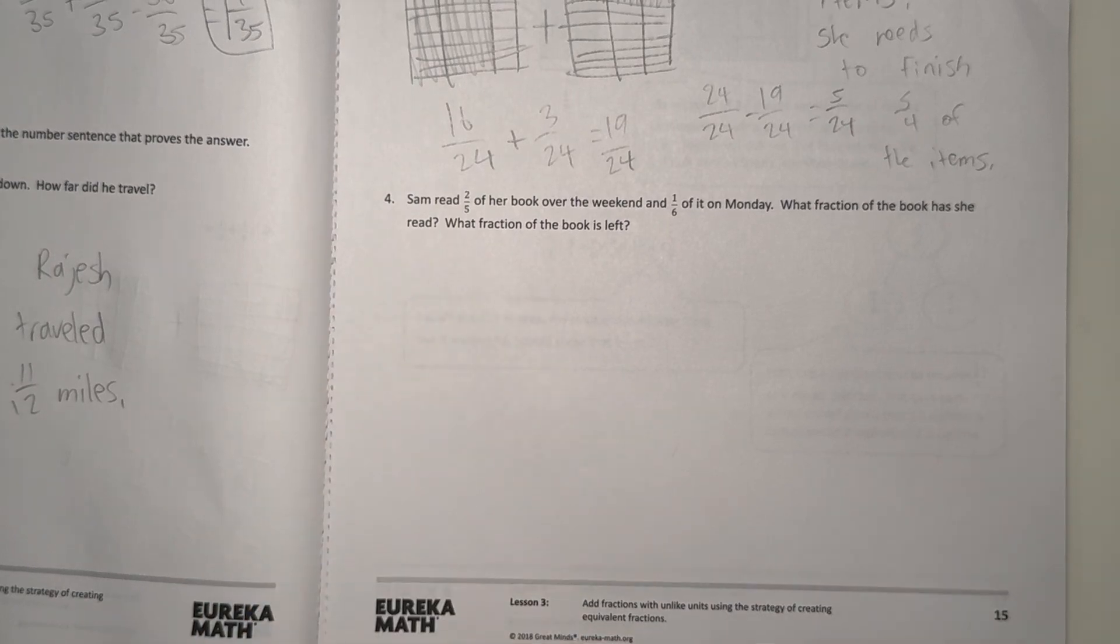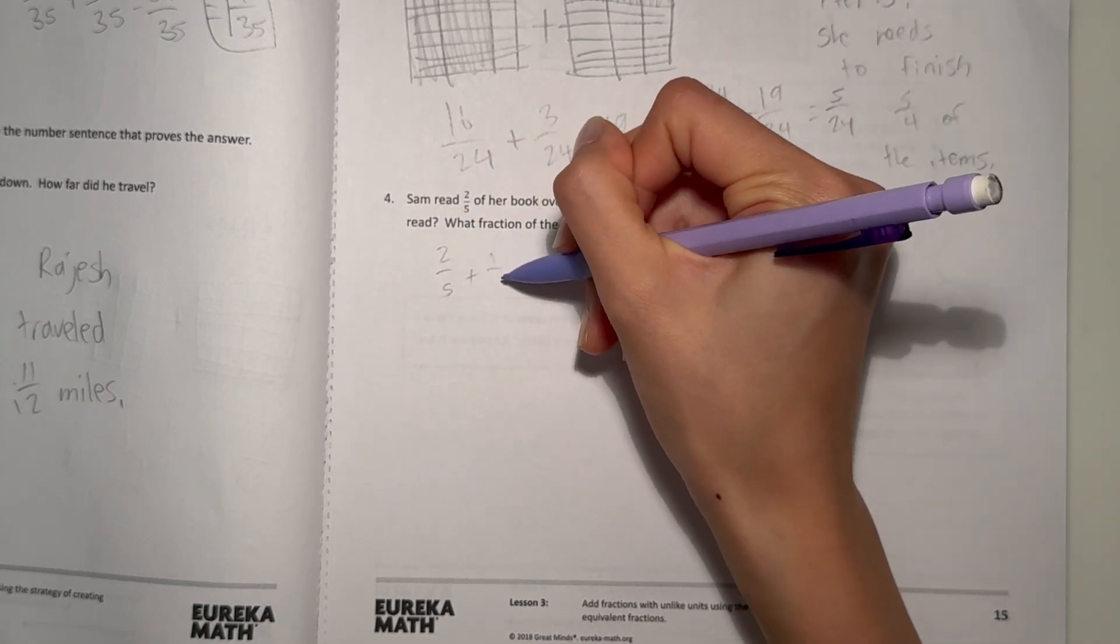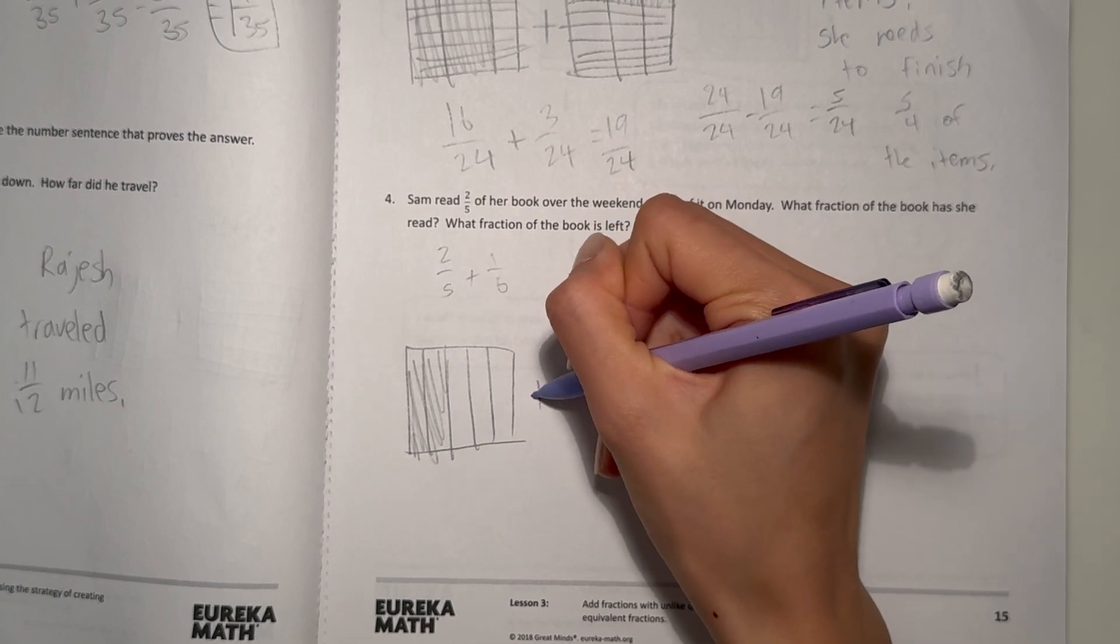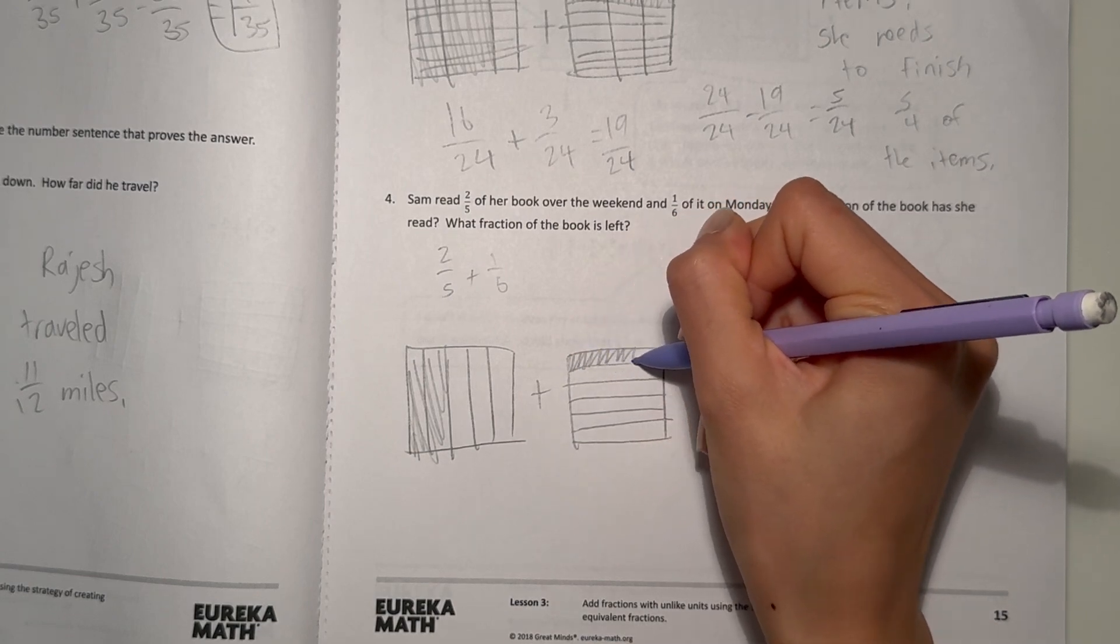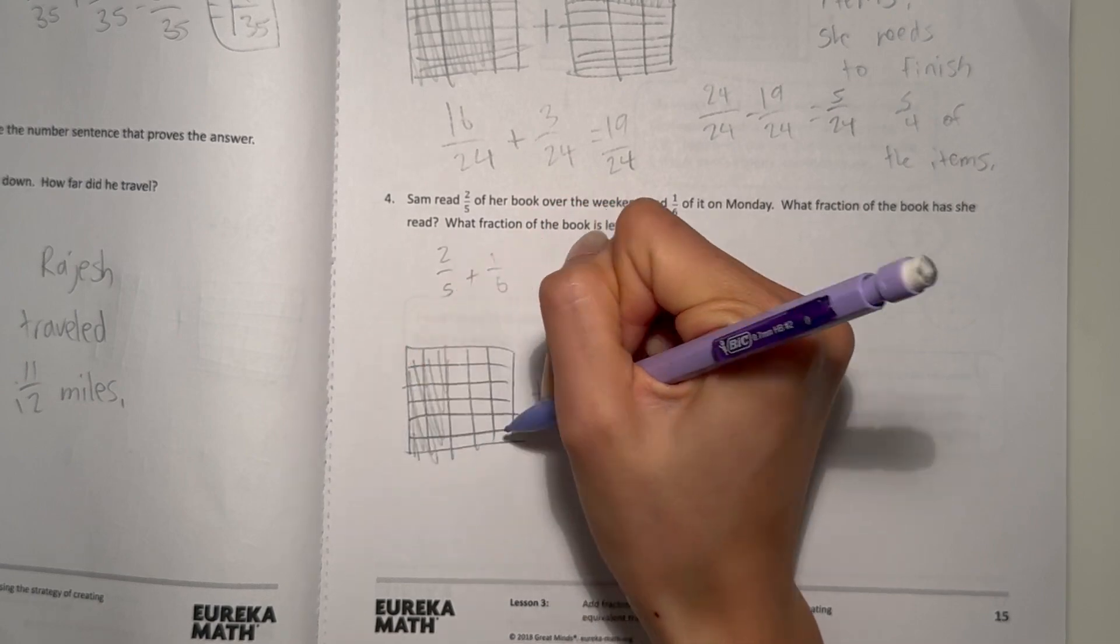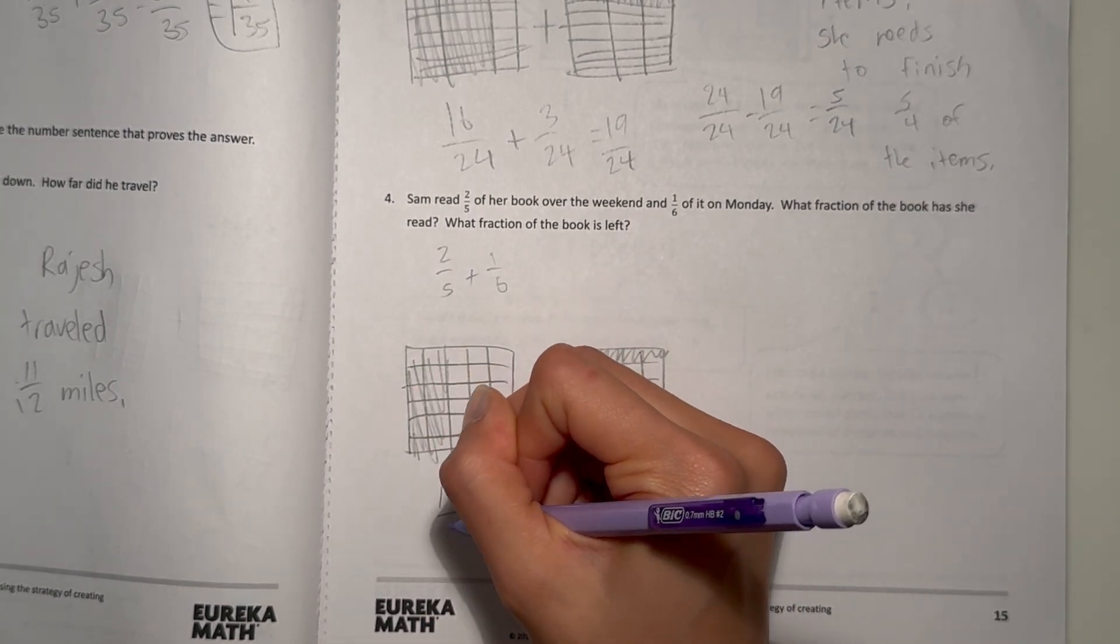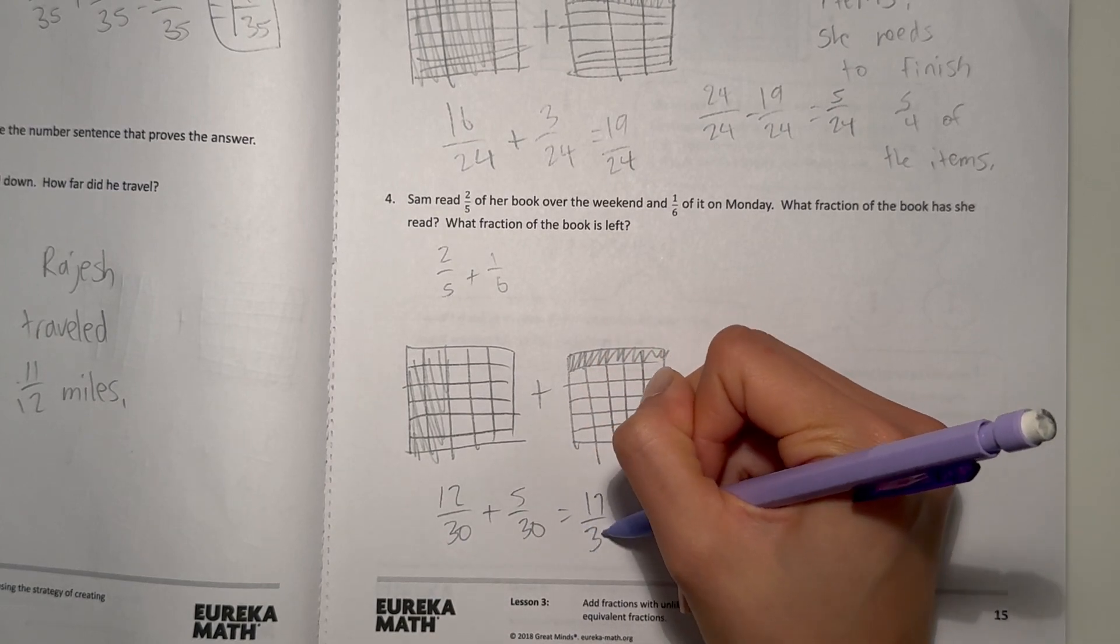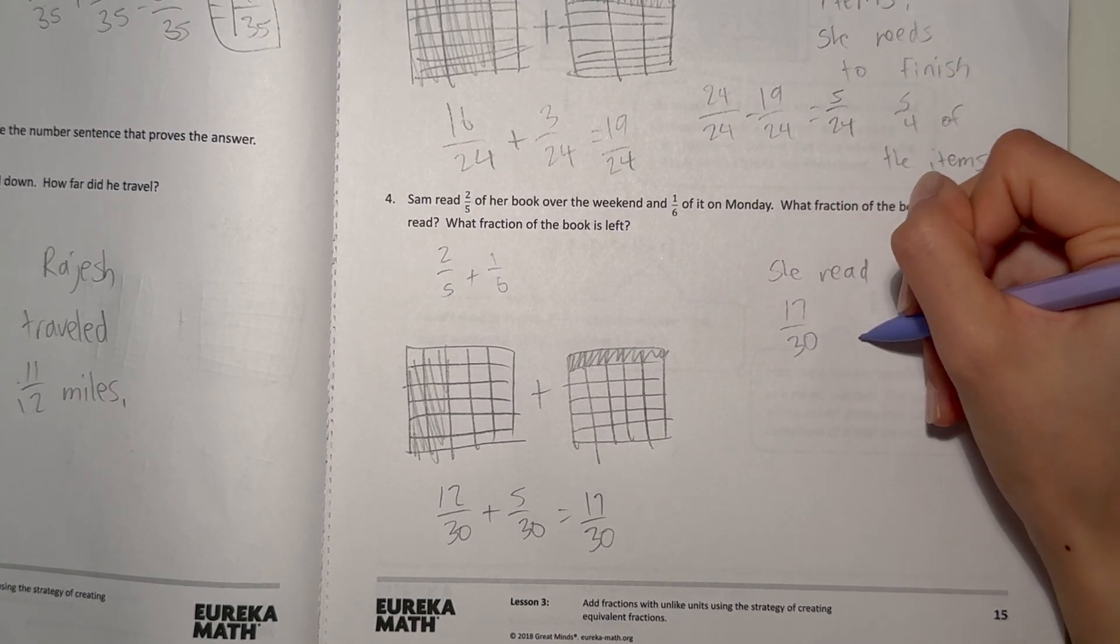Alright number four. Sam read two-fifths of her book over the weekend and one-sixth of it on Monday. What fraction of the book has she read? What fraction of the book is left? Two-fifths plus one-sixth. Alright two-fifths plus one-sixth. Now split this into six. So now two-fifths times sixth, we have twelve over thirty plus one-sixth times five is five over thirty which gives seventeen over thirty. So that means she read seventeen over thirty of it.